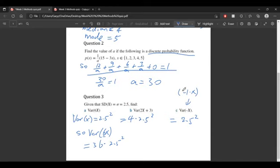Finally, variance of negative X can be thought of as negative 1 times X. Our formula gives us 1 squared times 2.5 squared, which is just 2.5 squared.